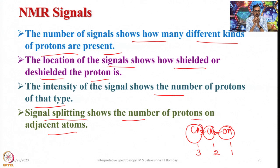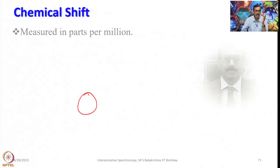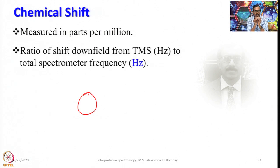This is where the importance of NMR comes in characterizing molecules. We call these signals chemical shifts; they are measured in parts per million as the ratio of shift down from TMS to the spectrometer frequency in hertz, which gives you parts per million.